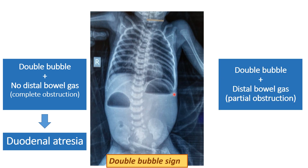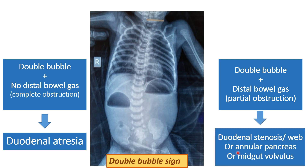Whenever the patient is having the characteristic double bubble sign but distal bowel gas is also visible — these two bubbles with air-fluid levels and some distal bowel gas — that means the patient is having partial obstruction, which is seen in duodenal stenosis, duodenal web, annular pancreas, or mid-gut volvulus.